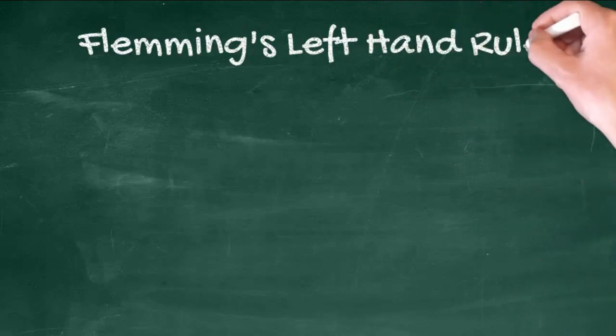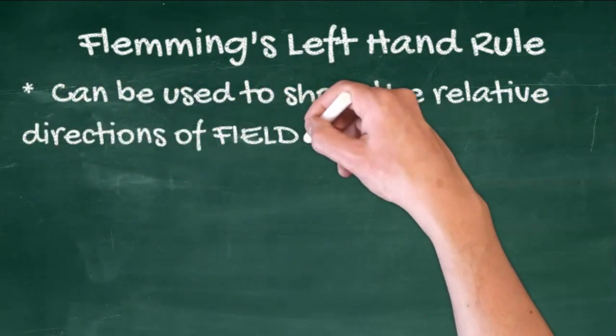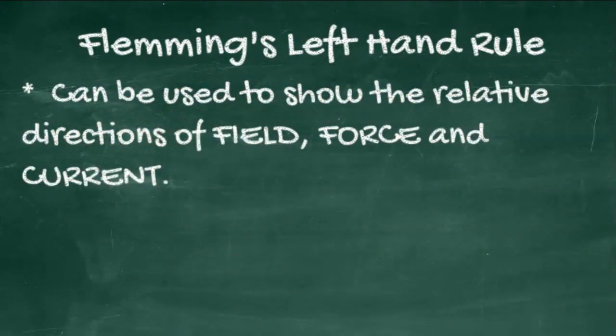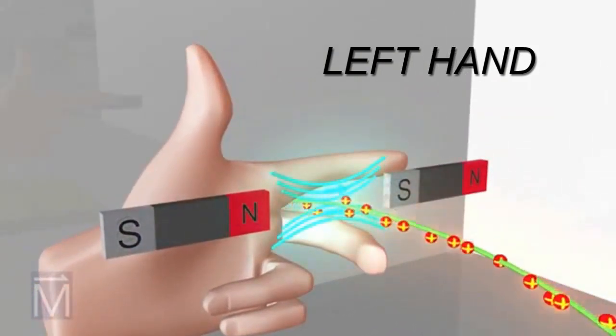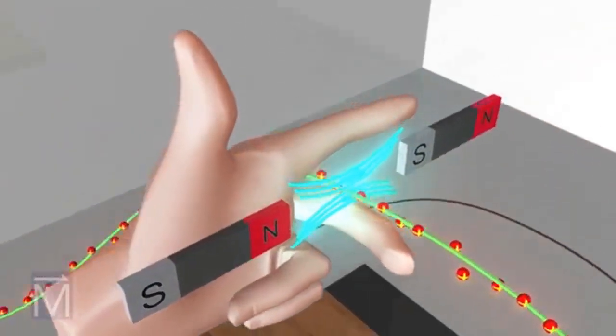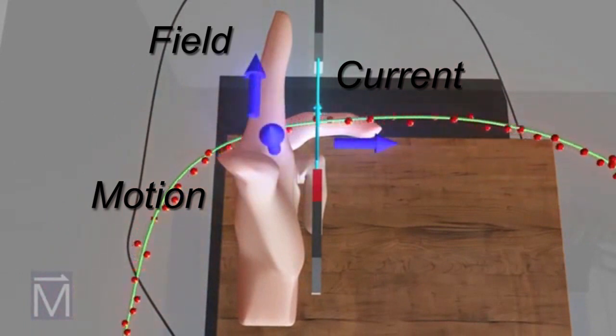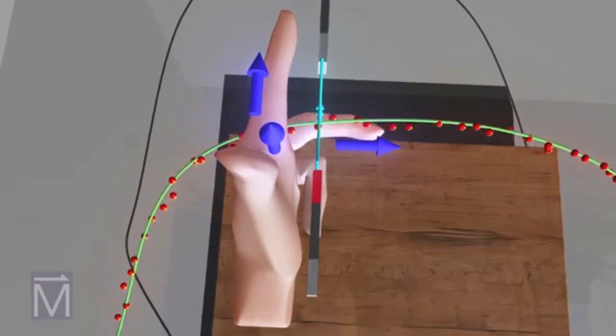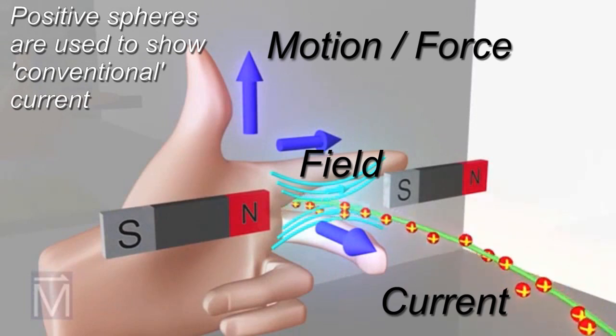Fleming's left-hand rule can be used to show the relative directions of the field, the current, and the resulting force. These two magnets provide that field, depicted here by the blue lines. When charged particles enter a magnetic field, the field exerts a force on them. You can use your hands to find out the direction of that force. Position your left hand like so, with your index finger pointing in the direction of the magnetic field, your middle finger pointing in the direction of the current, and your thumb pointing up, forming a right angle with your index finger.